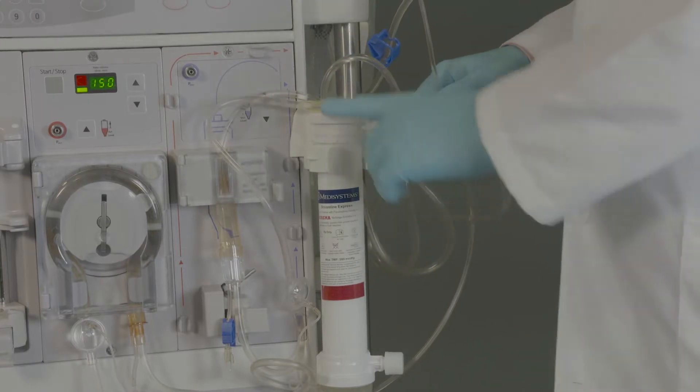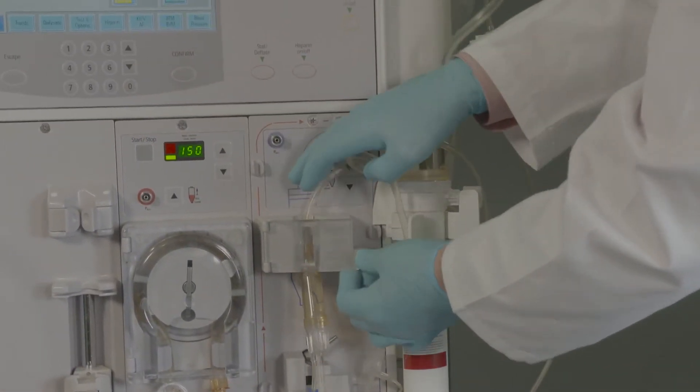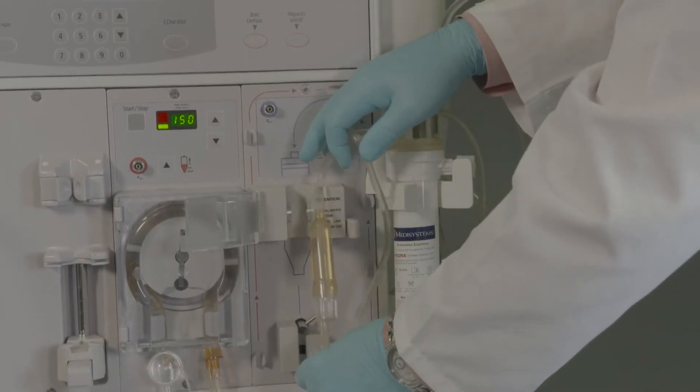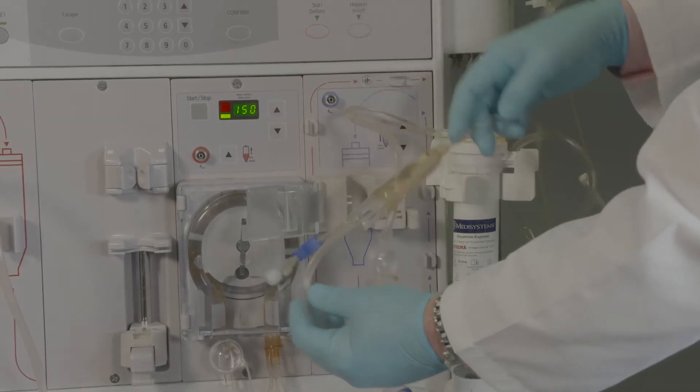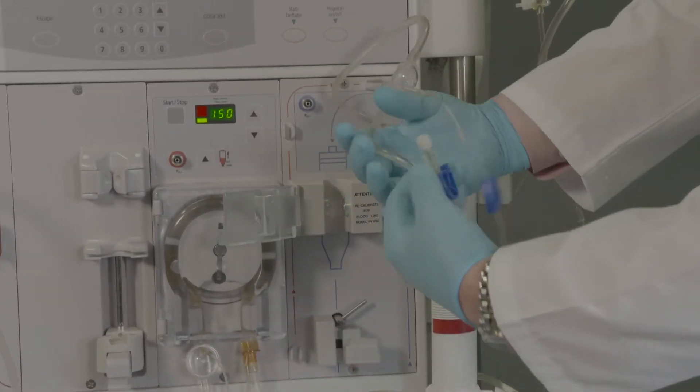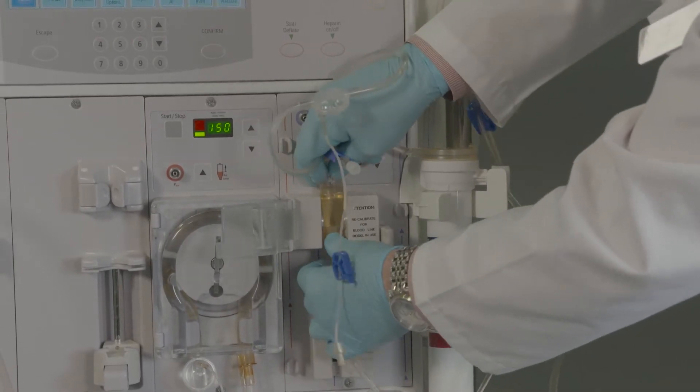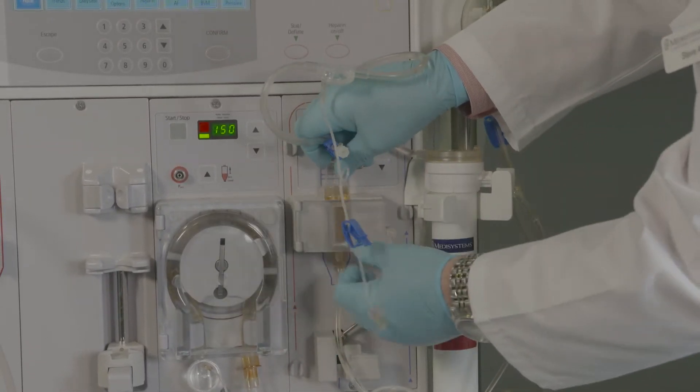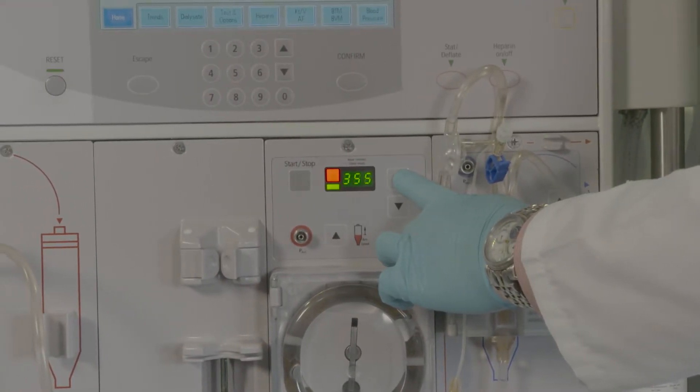Place venous chamber in upright position for recirculation, machine test, and treatment. At this point, the pump should be set for 400 milliliters per minute for recirculation.